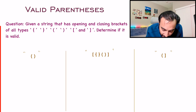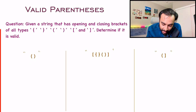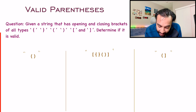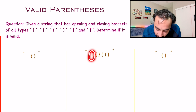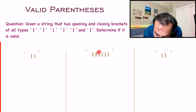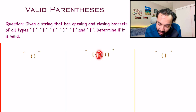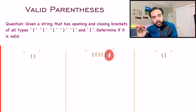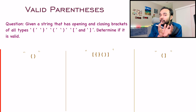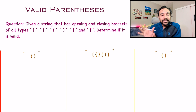You have to close all of these brackets in the same order in which you are opening them. So if you are opening the normal brackets first, then you have to close them first as well. In the second example, if you open the square brackets first and then the curly brackets, then first you have to close the curly brackets and only then you can close the square brackets. That is what valid parentheses actually mean.